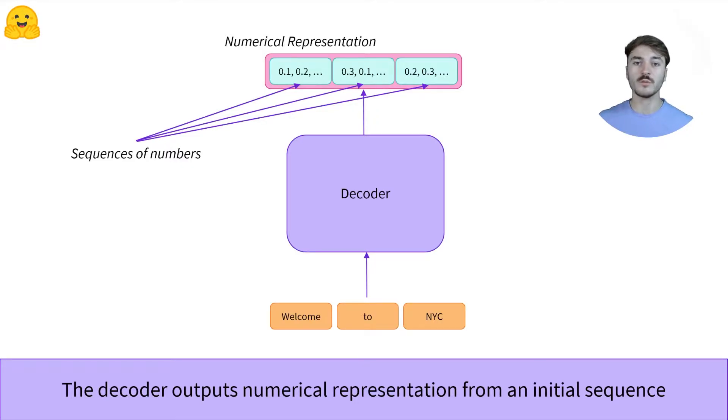The decoder outputs exactly one sequence of numbers per input word. This numerical representation can also be called a feature vector or a feature tensor.